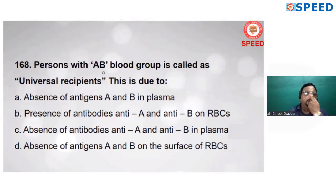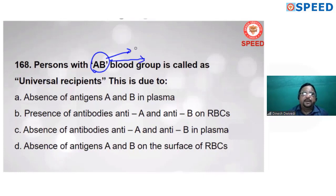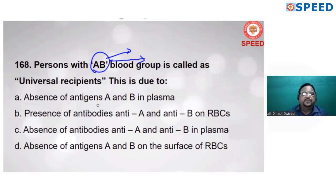Persons with AB blood group are called universal recipients. In AB blood group, antigen A and antigen B are both found on the RBC surface. Antigen is the specific protein found on the surface of RBCs. In AB blood group, antigen A and antigen B are both present, but antibody A and antibody B are absent. The reason AB blood group is called universal recipient is due to the absence of antibodies anti-A and anti-B in plasma. Alternate C is correct.